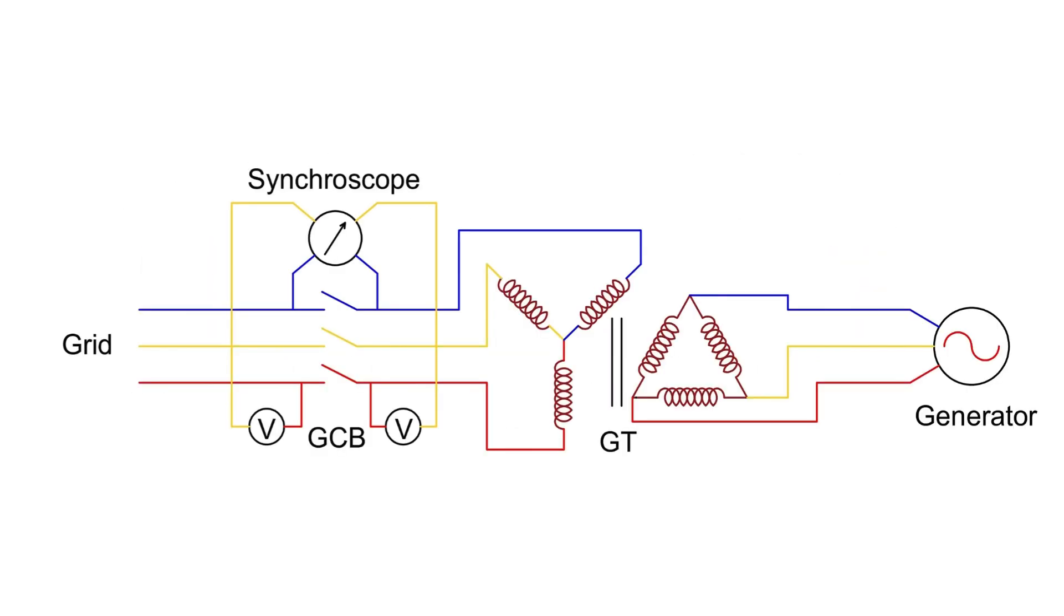For voltage magnitude, two voltmeters are used, one for the grid and one for the incoming generator. To monitor frequency and phase angle, we have the synchroscope. When the frequency and phase angle are almost the same, the synchroscope signals that you can close the GCB.